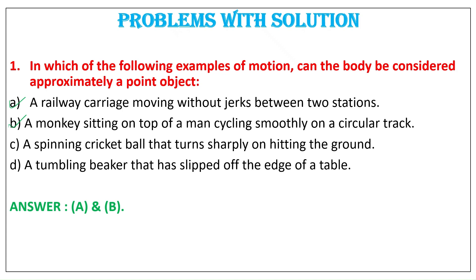In C, the size of a spinning cricket ball is comparable to the distance through which it turns sharply on hitting the ground. Hence, the cricket ball cannot be considered as a point object. In D, the size of a beaker is comparable to the height of the table from which it slipped. Hence, the beaker cannot be considered as a point object.